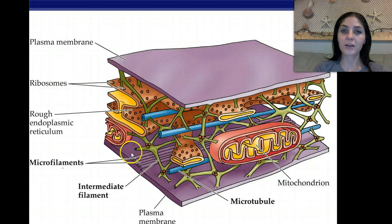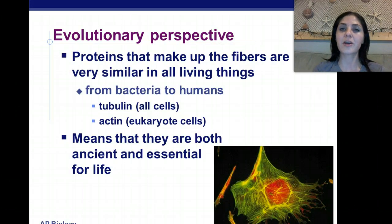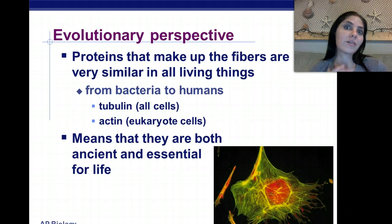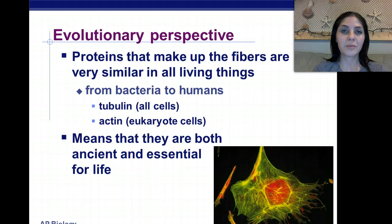The microfilaments are right here, which are the smallest. And then we have microtubules right here, which are these little blue guys. From an evolutionary perspective, the proteins that make up the fibers are very similar in all living things. Whether you're a bacteria or a nerdling like myself, you have the same type of structural proteins. We all have tubulin, and all eukaryotic cells have actin. This means that they are both ancient and essential for life. I would make sure to take special note of this because you will have an activity asking you about this.